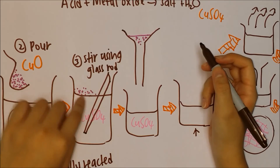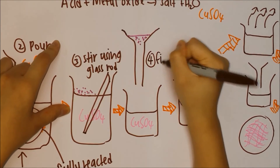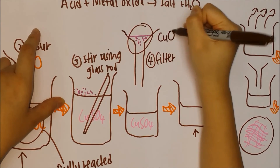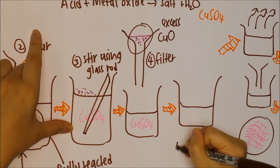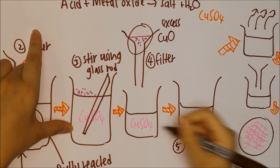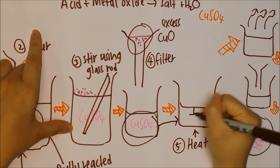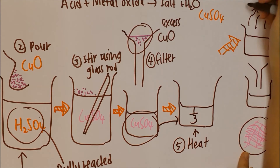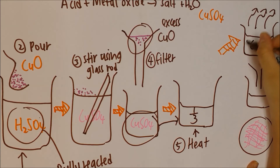After that, filter the mixture to remove the excess copper oxide powder. Then heat the copper sulfate solution until one-third of the solution is left. Allow it to cool at room temperature, then filter it again.